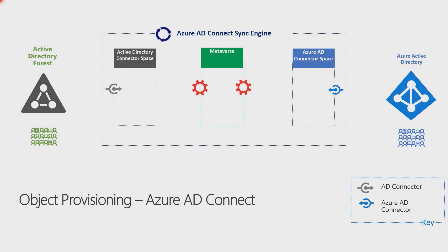In this video today, we're going to cover how Azure AD Connect keeps Active Directory and Azure Active Directory in sync. Here at the left, we have on-premises Active Directory Forest. On the right side, we have Azure AD. For this flow, we will refer to both AD and Azure AD as data sources. Then we have Azure AD Connect here in the middle.